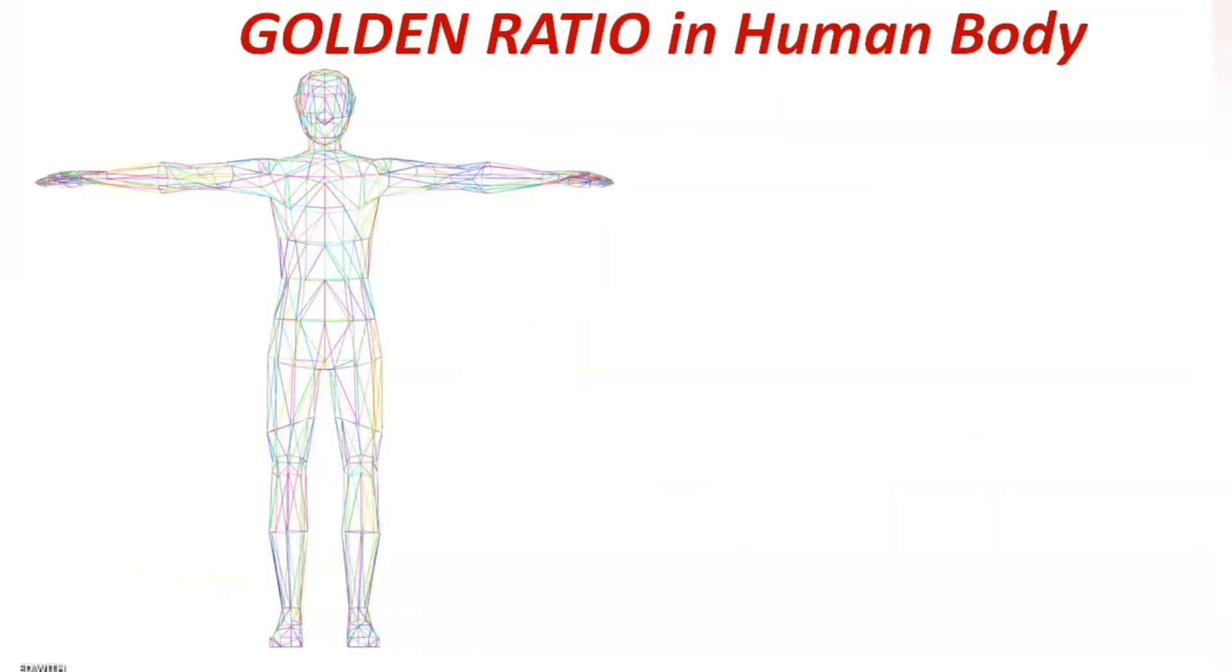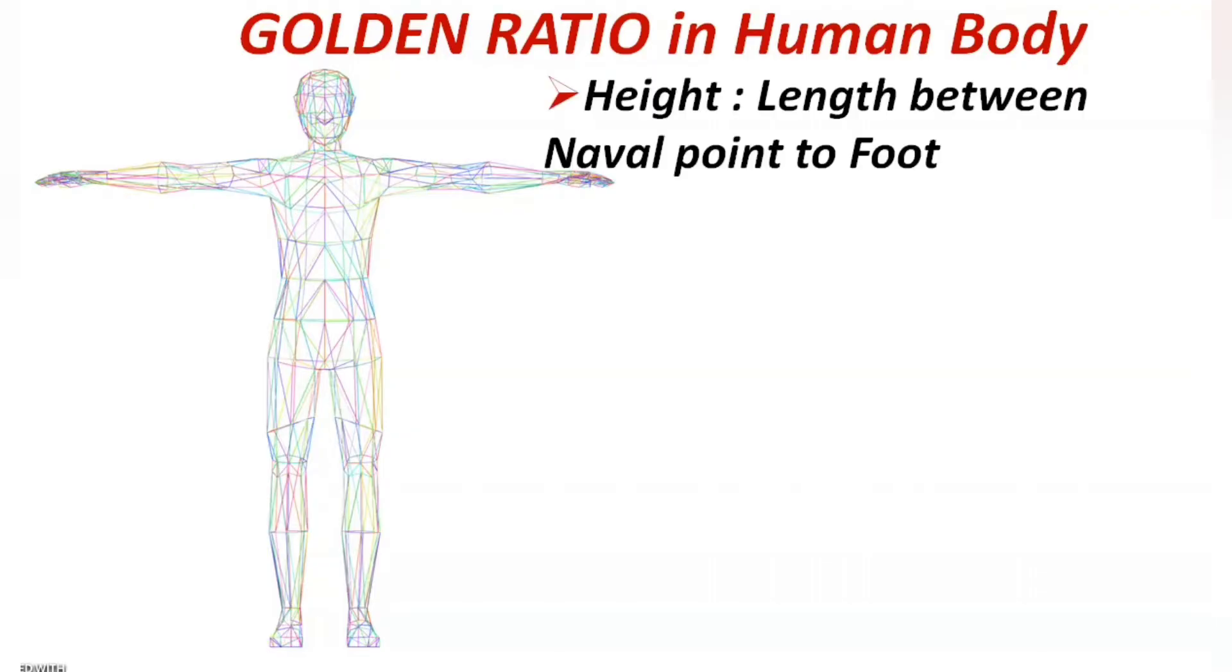Even human beings are no exception to this golden ratio. In fact, our body architecture is one of the most perfect examples of this divine proportion. Let us consider these ratios in the human body. Height is to length between navel point to foot.